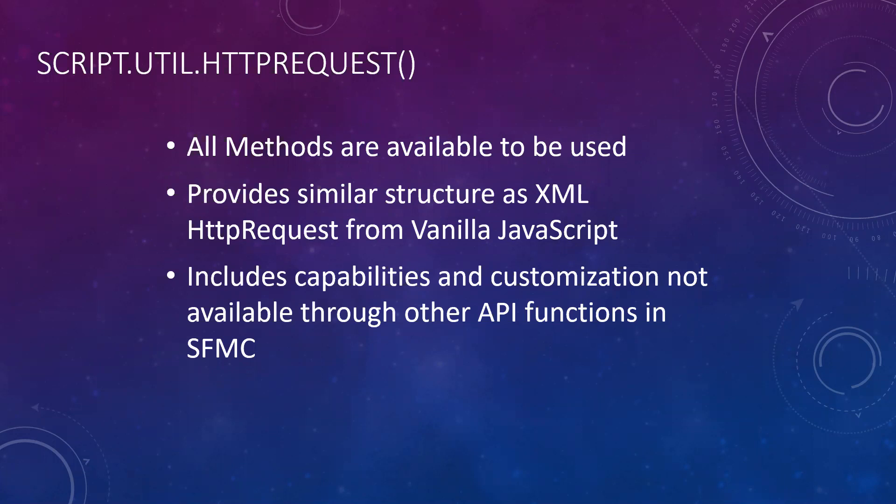It also includes capabilities and customizations not available through other API functions in Marketing Cloud. A great example is that other than two other functions inside of all of Marketing Cloud's API capabilities, this is the only one that allows you to continue on with any status code other than a 200 without throwing an exception. The only other two places this is possible are in AMPscript — the post to and the HTTP get functions — which have a parameter that allows you to continue on if it's not a 200 response.